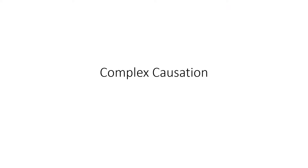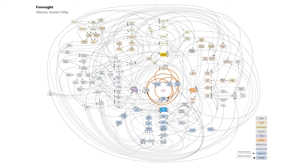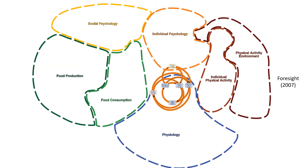Let's think about the complex causation of childhood obesity. This system's map of influences on obesity was developed by Foresight in the UK in 2007. Let's simplify it a little. The influences involve social psychology, food production, food consumption, physiology, individual psychology, individual physical activity and the physical activity environment.